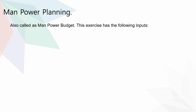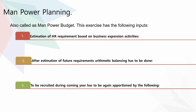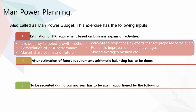Manpower Planning is also called the Manpower Budget. The exercise has the following inputs. The first one is estimation of HR requirement based on business expansion activities. It is done by targeted growth method, extrapolation of past performance, market share estimate of future, zero-based projections by effort proposed, percentile improvement of past averages, moving averages method, etc.